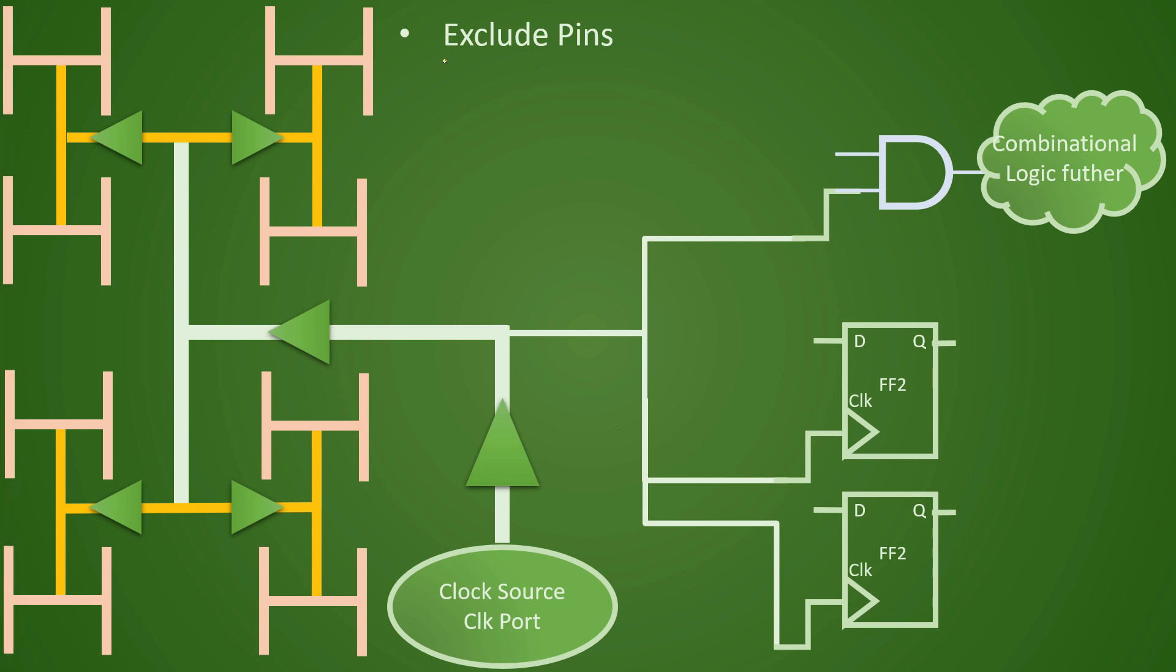Next point that we need to understand is exclude pins. So exclude pins are those pins which we exclude while doing the skew analysis. We exclude such pins while doing skew analysis. So in the skew balancing these pins will not be counted and we explicitly have to specify such pins.